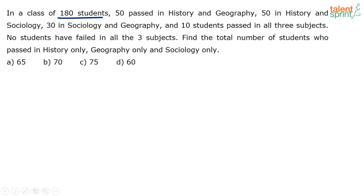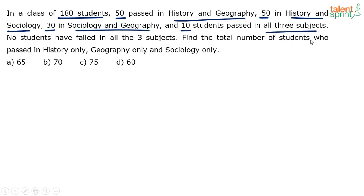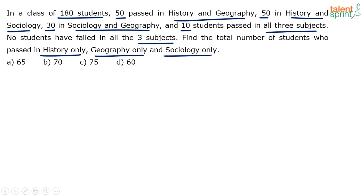So basically the problem says there is a class of 180 students — that's the total strength. 50 of these students passed in History and Geography, 50 passed in History and Sociology, 30 passed in Sociology and Geography, and 10 students passed in all three subjects. No student failed in all three subjects — students could have failed in one or two subjects, but none failed in all three. We need to find students who passed in only one subject: History, Geography, or Sociology.